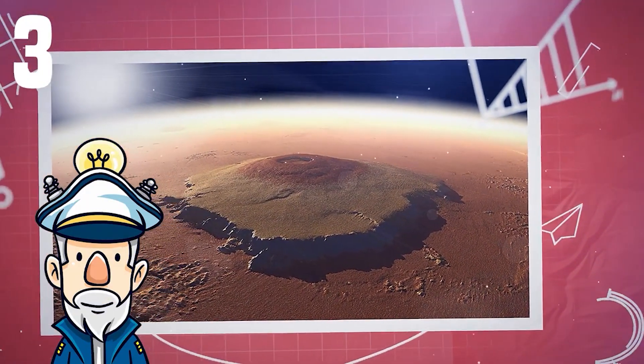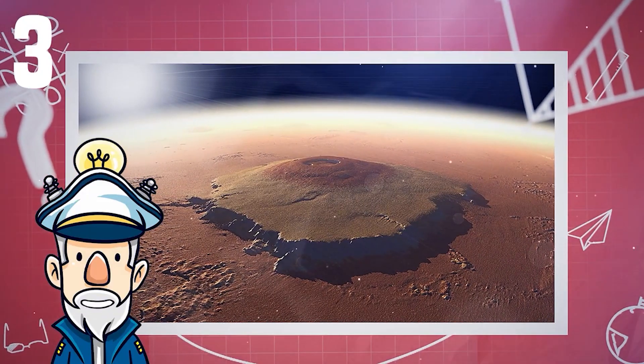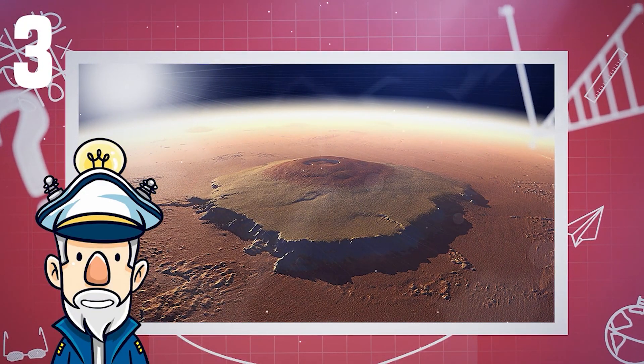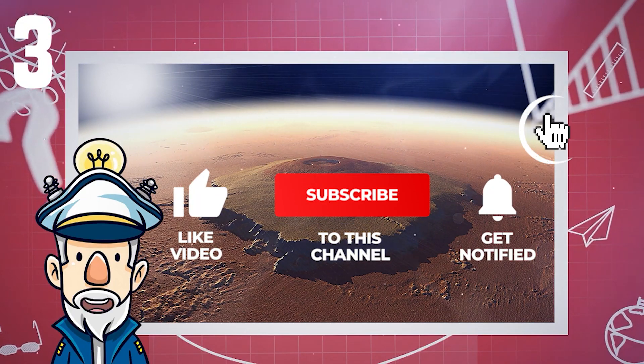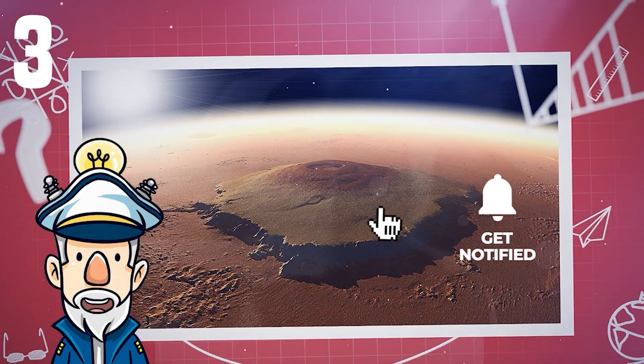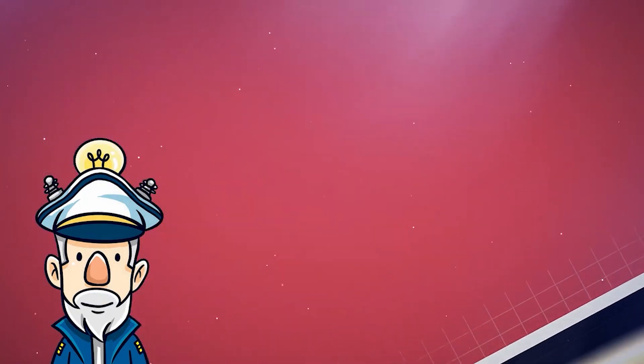Number 3: While we certainly have some big volcanoes here on Earth, the biggest known volcano in our solar system is actually on Mars. Its name is Olympus Mons, and it measures a whopping 600 kilometers (373 miles) wide and 21 kilometers (13 miles) high.